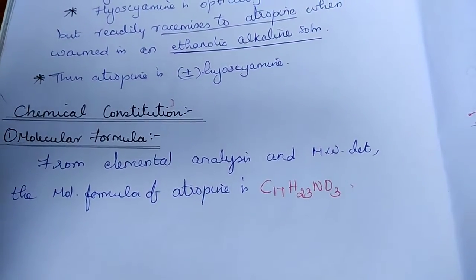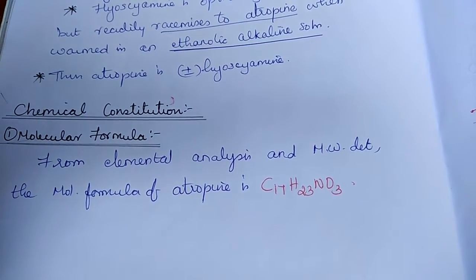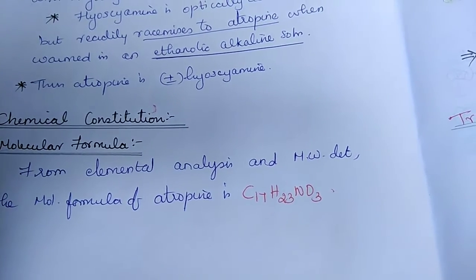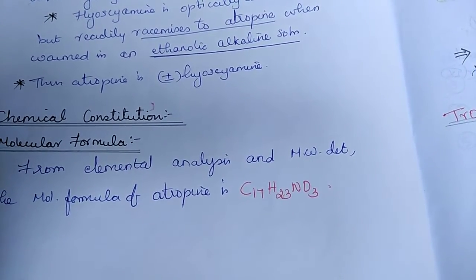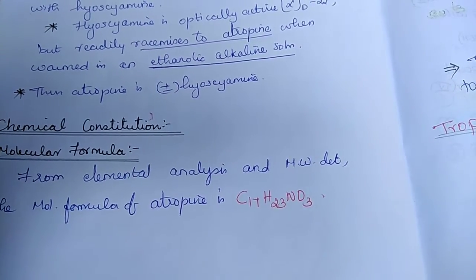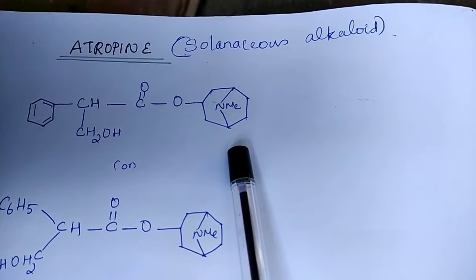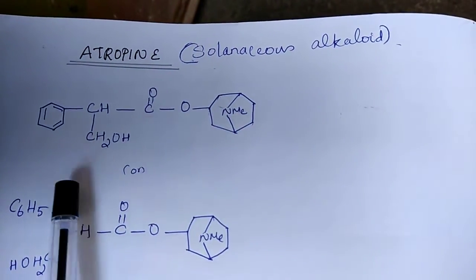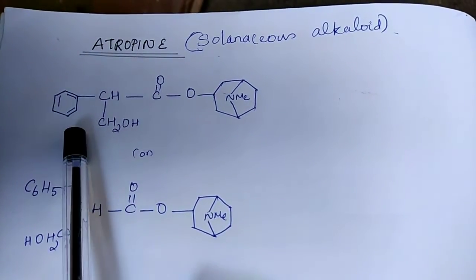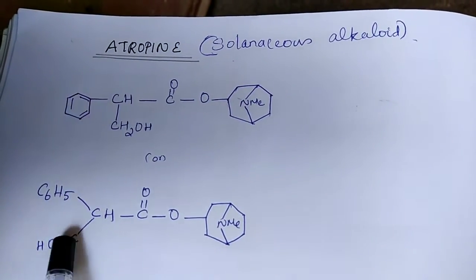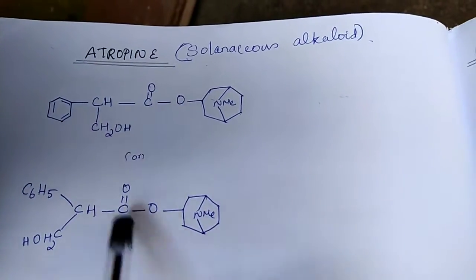Now let us move further to the chemical constitution of atropine. The first point is molecular formula. The molecular formula is C17H23NO3 as you can see from the structure. Both are same but C6H5 is represented in a ring form here and expressed as C6H5 there. That's the difference and otherwise both are same.